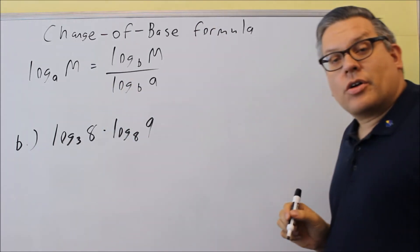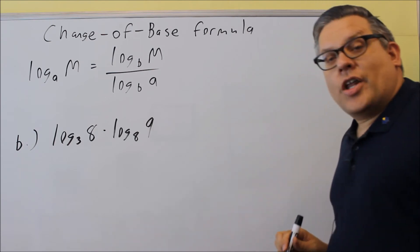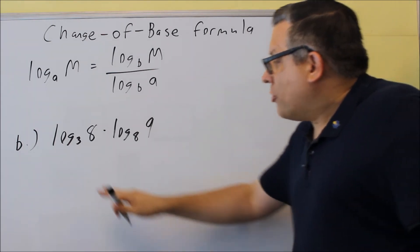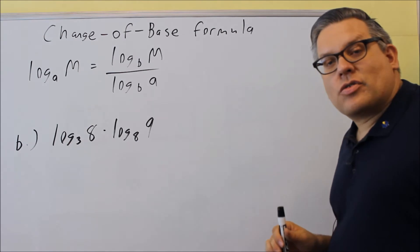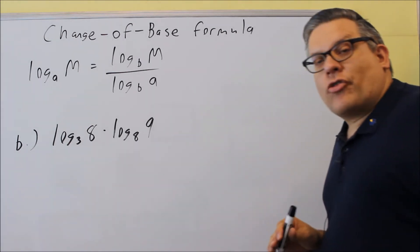That's what the little dot means here. So you're multiplying these two together. So I'm going to have to use a change of base formula for each one of these separately since I have two different logs.